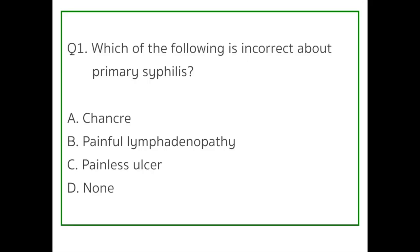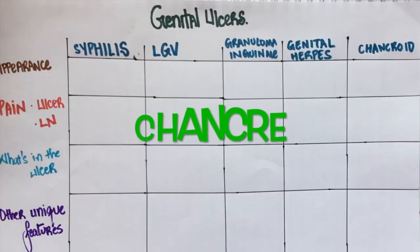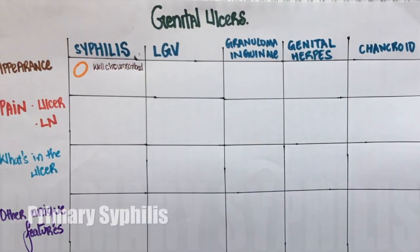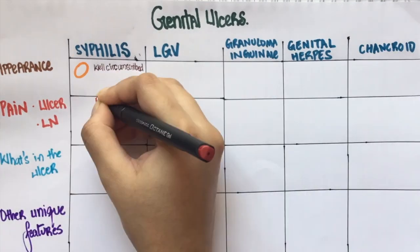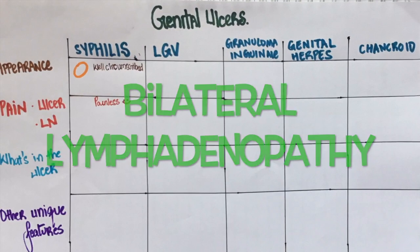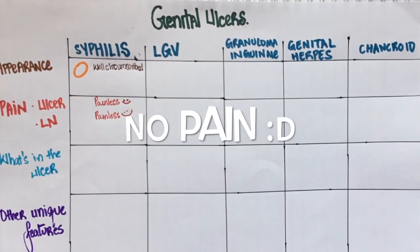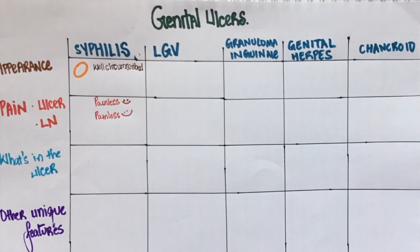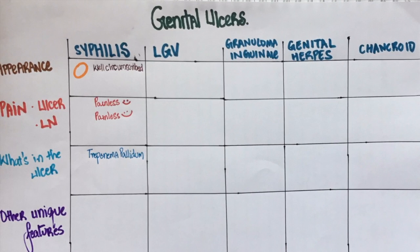Question number one: Which of the following is incorrect about primary syphilis? Option A: Chancre. Option B: Painful lymphadenopathy. Option C: Painless ulcer. Option D: None of the above. The answer is painful lymphadenopathy. The chancre is a well-circumscribed lesion seen in patients with primary syphilis — it is a painless ulcer. Bilateral lymphadenopathy is also seen in these patients, and the lymph nodes are painless as well. Since there is no pain associated with primary syphilis, there's a high chance of it going undiagnosed at this stage. The chancre has a lot of Treponema pallidum, which is the bacteria that causes syphilis; hence this lesion is highly infectious. It can be treated with penicillin.